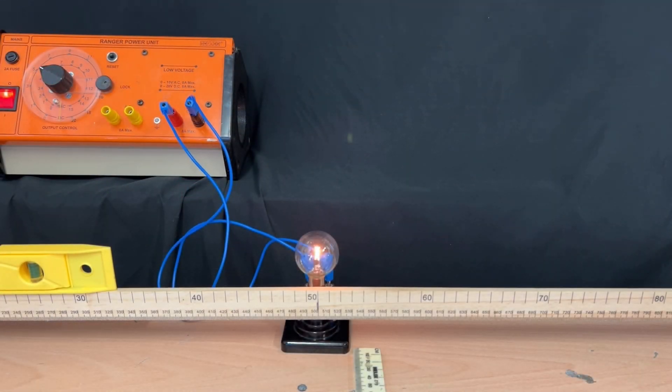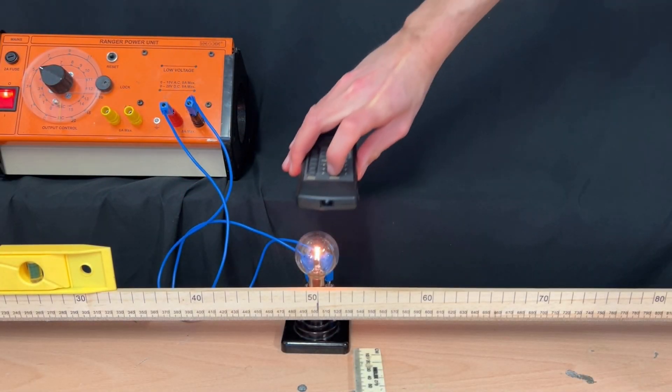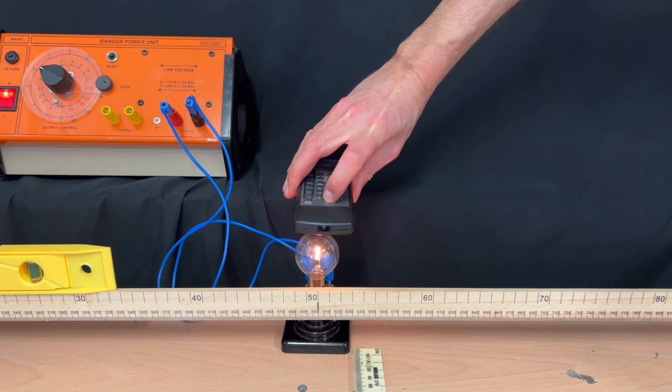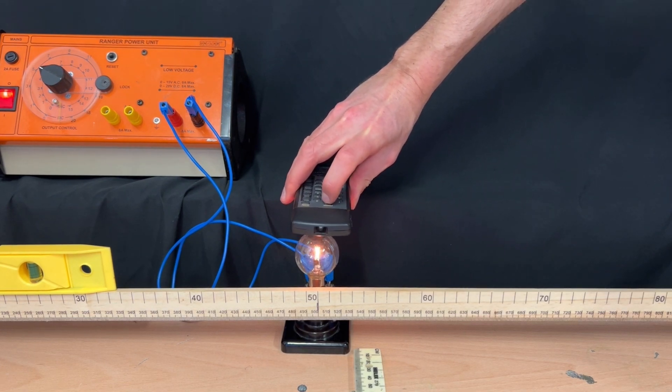If you look at an infrared remote control with your eyes you can't see anything coming from it because your eyes can't detect the infrared.